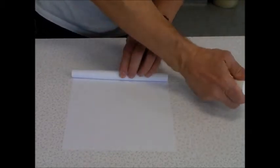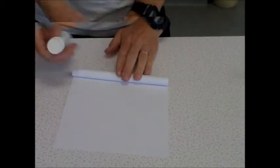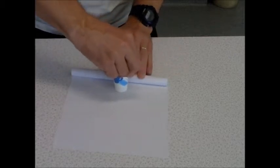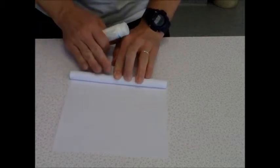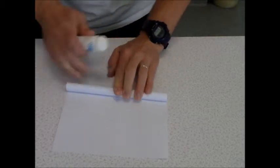You take your glue, put a line of glue across there, roll it a bit, and another line of glue, roll it some more.